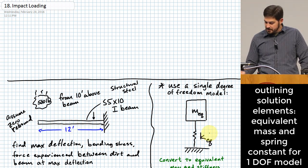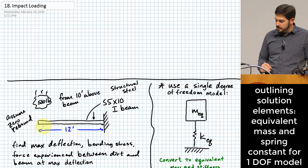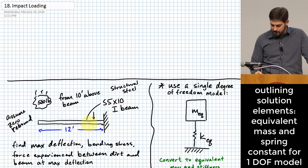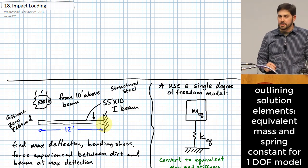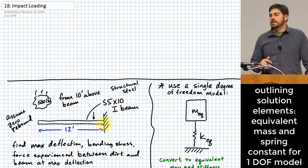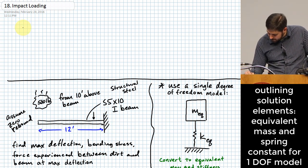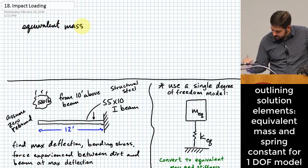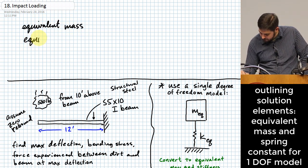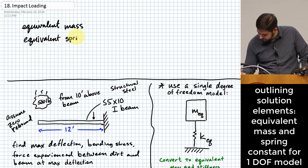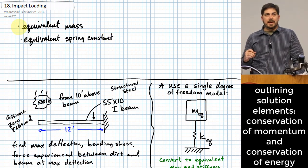We'll do the same thing for the spring constant. This beam is elastic — it's able to flex — and so we should be able to come up with a statement for how much the beam will deform under a given amount of load on its end. So we've got to find an equivalent mass and an equivalent spring constant. We also have to do a dynamics analysis. Let's think about what happens when the dirt actually hits the beam.